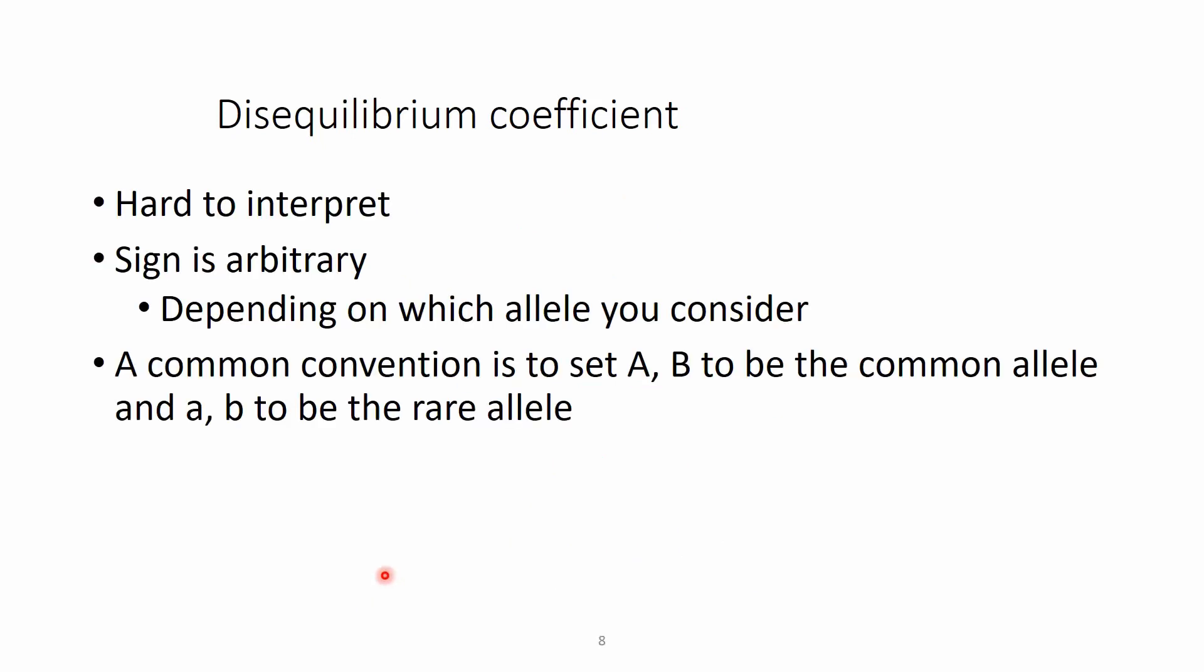But we have a bit of a problem with this disequilibrium coefficient because it's a bit hard to interpret and the sign is arbitrary. So it's depending on which allele actually you consider first. Of course, there is a common convention to set the capital A and capital B to be the most common allele and the lowercase a and b to be the rare allele. But of course, the rarity of the allele, so the minor allele frequencies, can change from population to population even within the same species. So that is not such a big win after all.